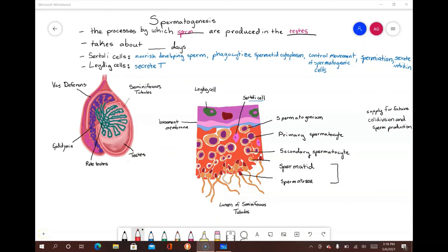In humans, the process of spermatogenesis takes about 75 days and begins with spermatogonia, which are diploid. Some of the spermatogonia undergo mitosis and remain near the basement membrane to serve as a continuous supply for future cell division and sperm production.